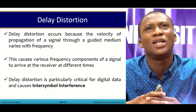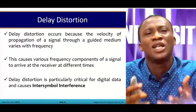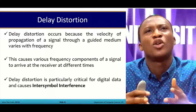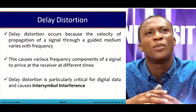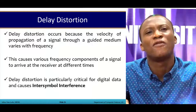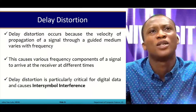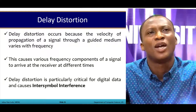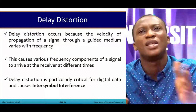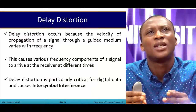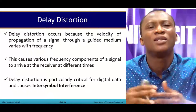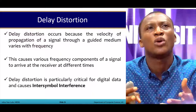Now let's look at delay distortion. Delay distortion occurs because the velocity of propagation of the signal through the guided medium varies with frequency. So when moving a signal from one point to the other, if there is delay in that transmission, we call that delay distortion.